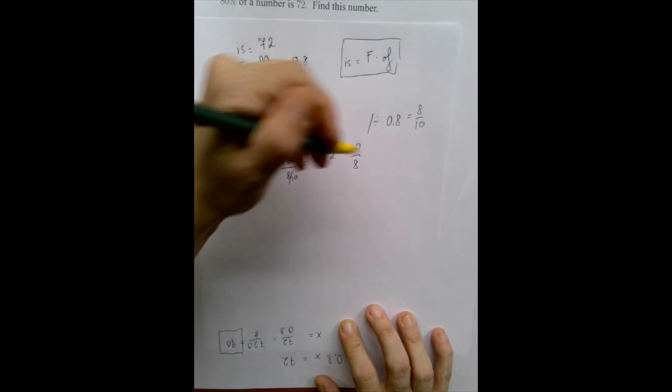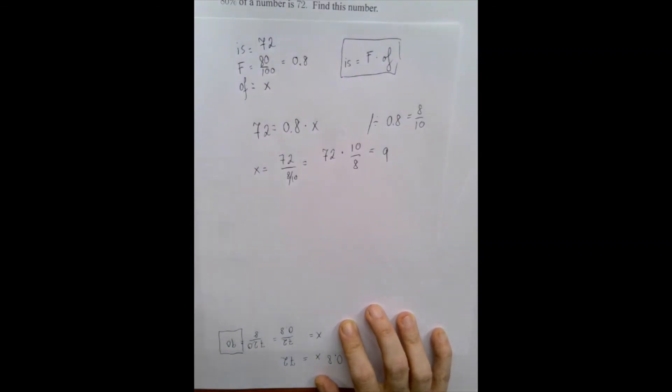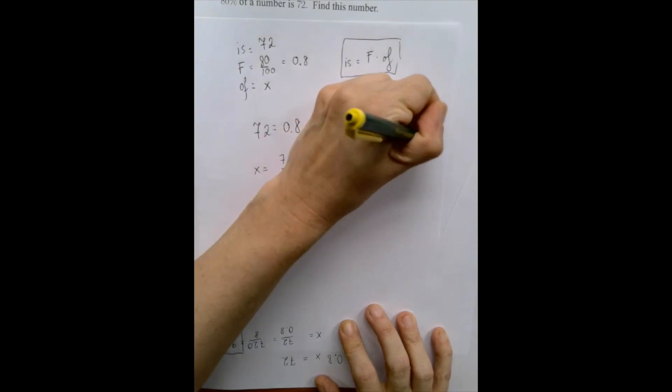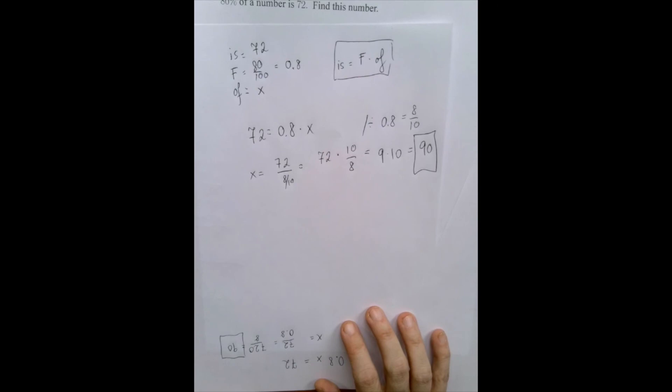Between 72 and 8, there is cancellation. Because 72 divided by 8 is 9. So we have 90. All right. Thank you.